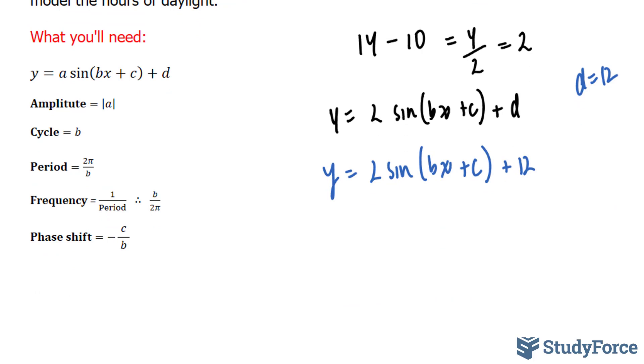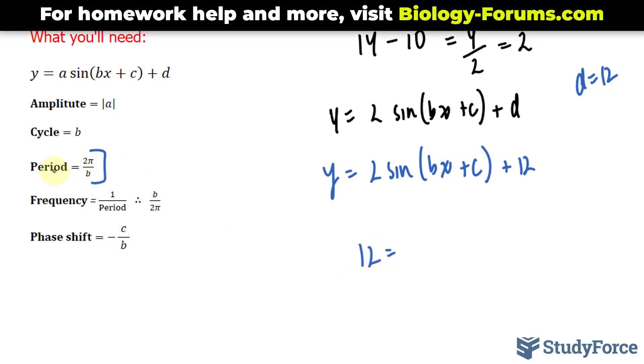The tricky part is finding b and c. b represents your cycle, and to find your cycle you can use this relationship. The period is a 12-month period because there are 12 months in a year. I'll substitute 12 where we have period = 2π/b.